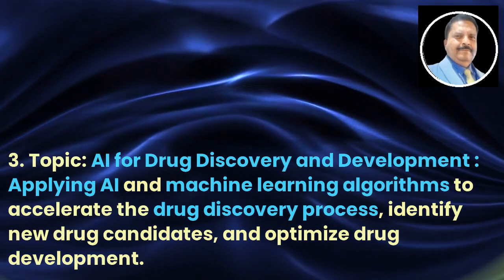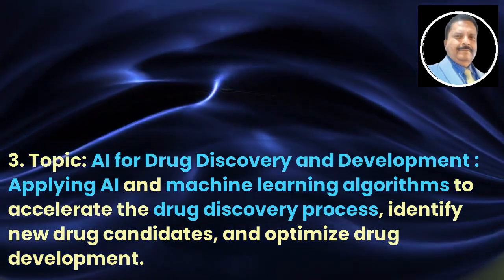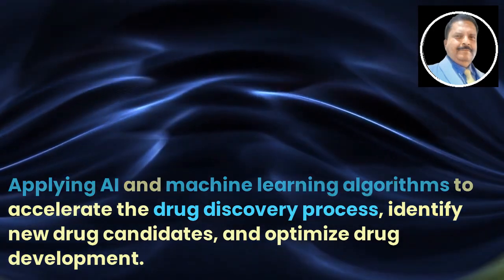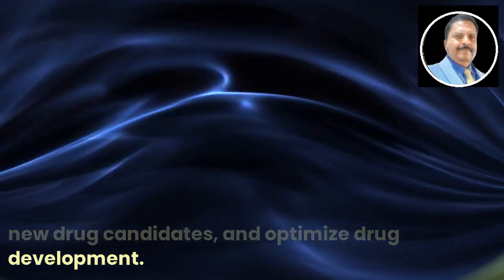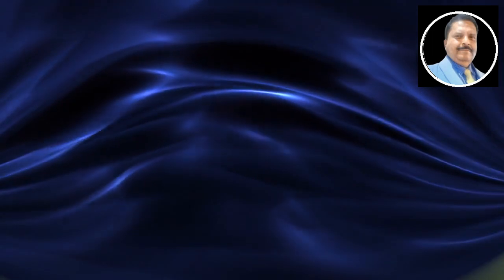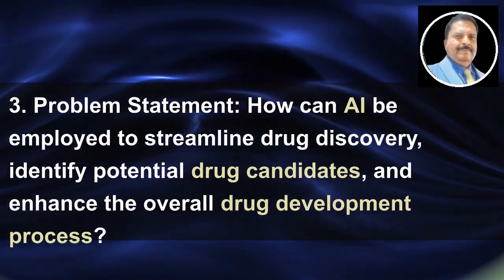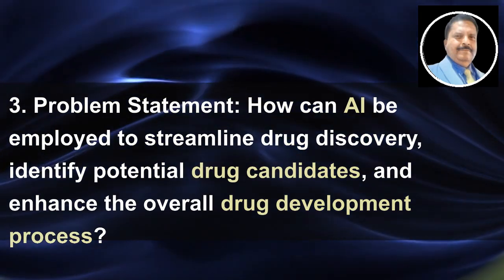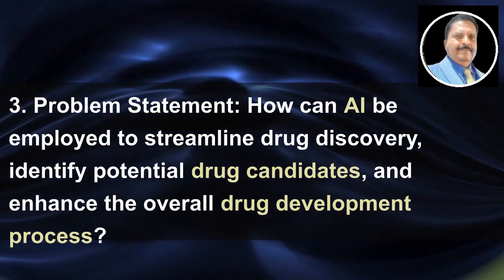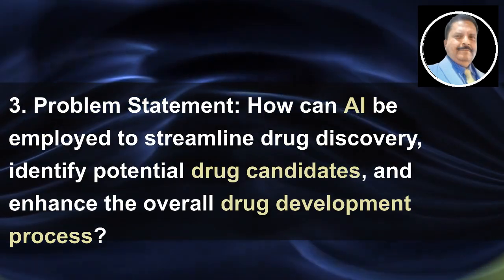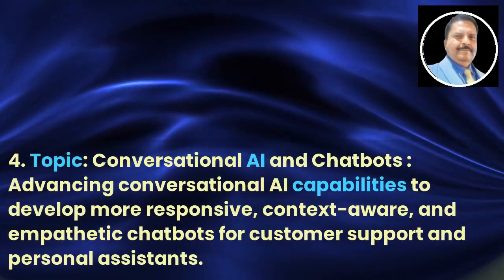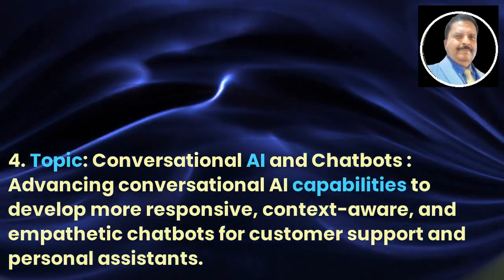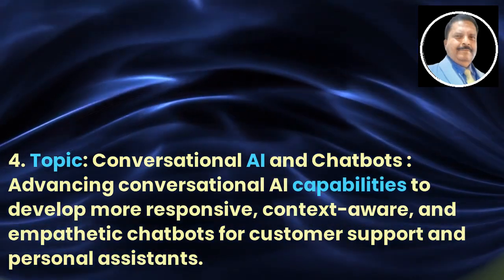Topic 3: AI for Drug Discovery and Development. Applying AI and machine learning algorithms to accelerate the drug discovery process, identify new drug candidates, and optimize drug development. Problem statement: How can AI be employed to streamline drug discovery, identify potential drug candidates, and enhance the overall drug development process?